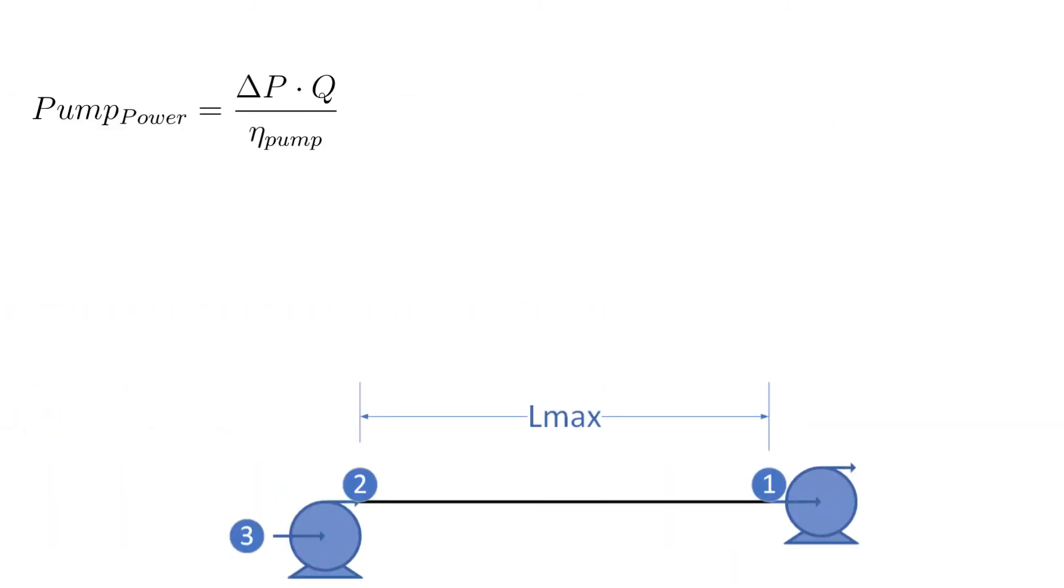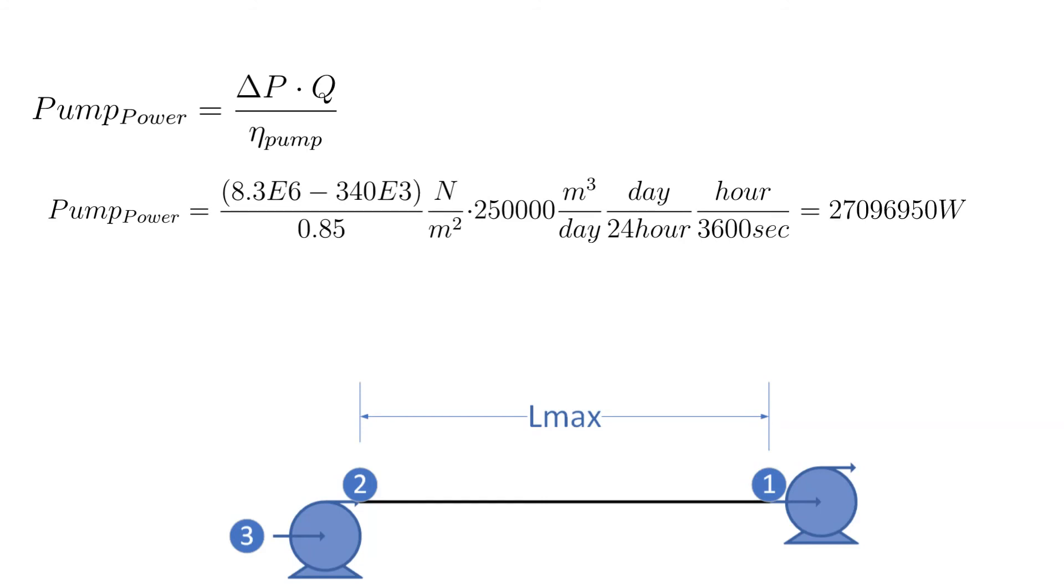Next, we calculate the required power to the pump. The pump efficiency is 0.85. The equation to calculate the pump power is repeated below. The calculation is straightforward. However, as usual we have to be careful with units. The result is 27,100 kilowatts. That's a lot of power. Of course, this is a very big pipeline.